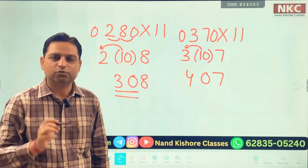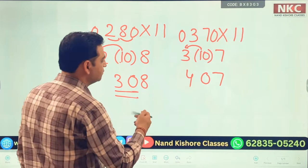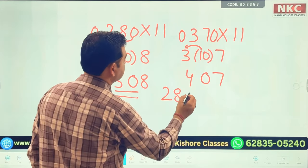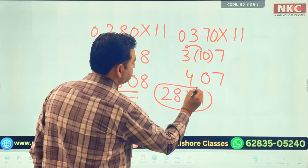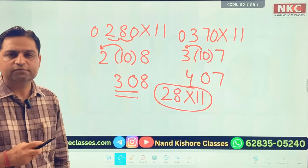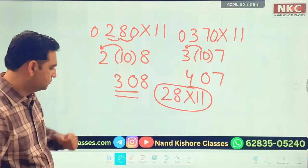I hope you are able to understand. Try out one question. You do this question: 28 multiply 11. Practice this question and write your answer. And I am coming to 3 digit number question.